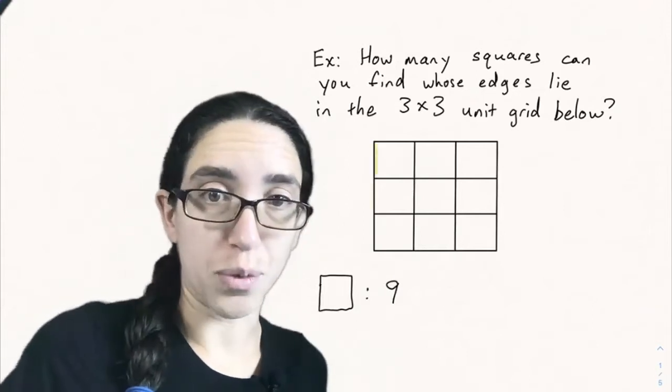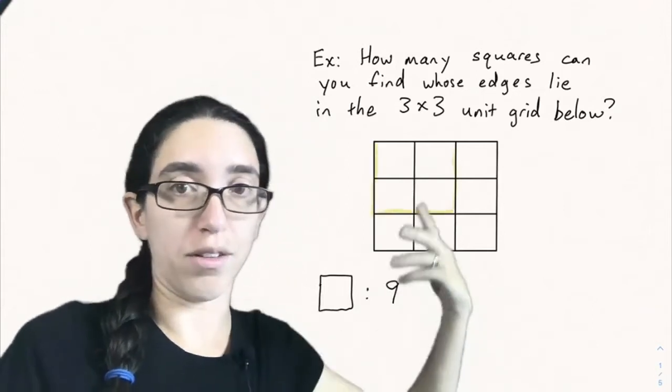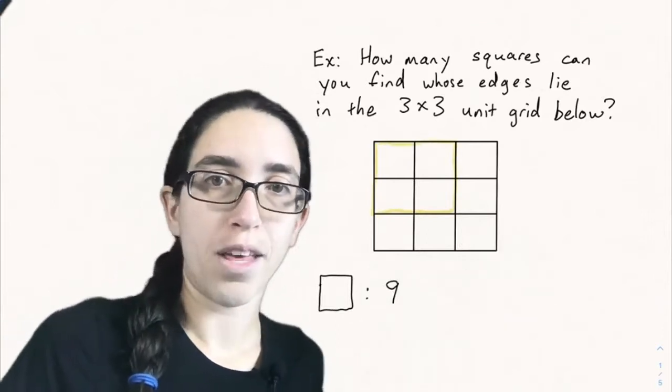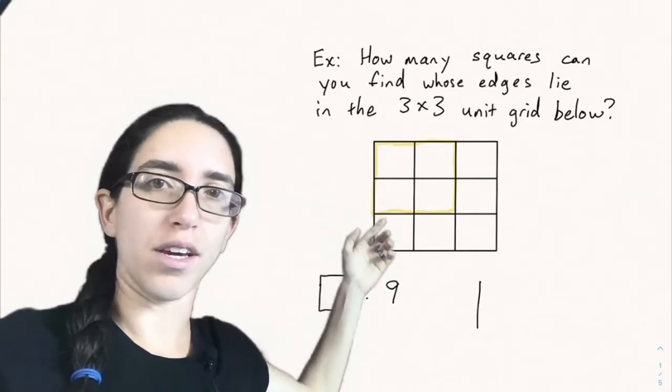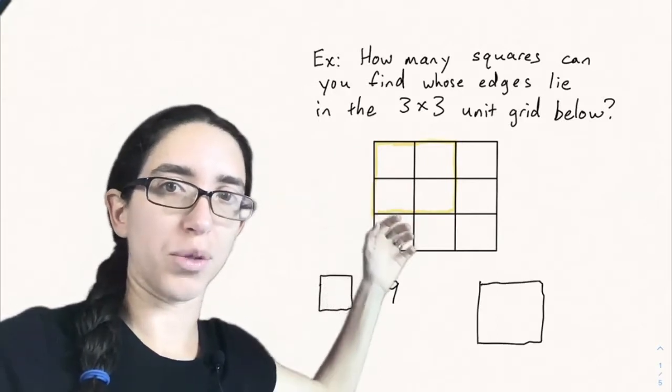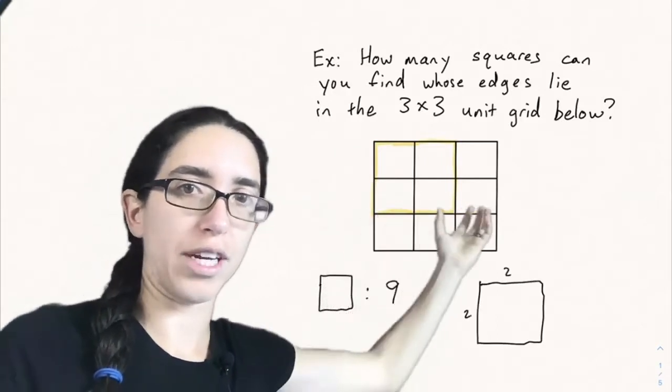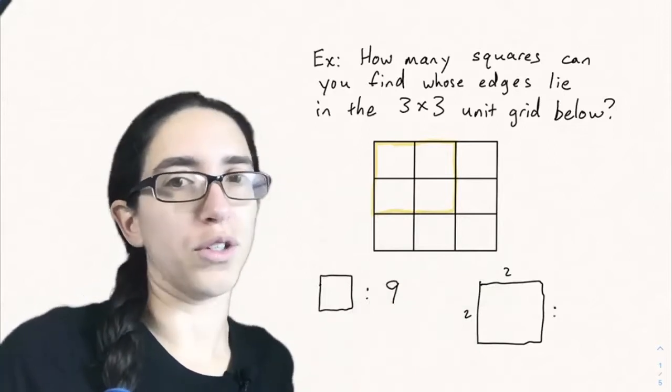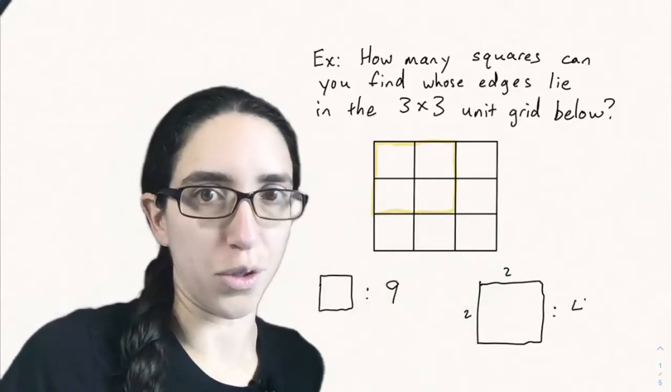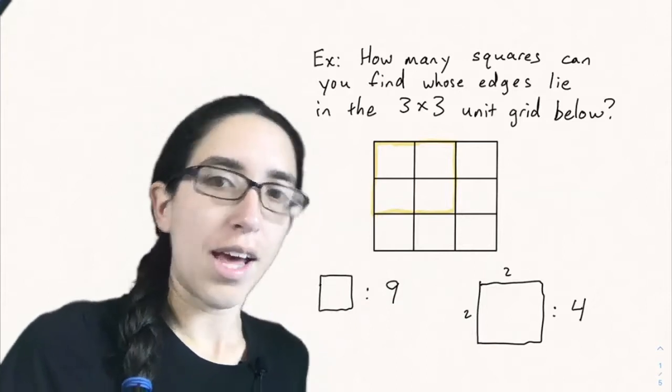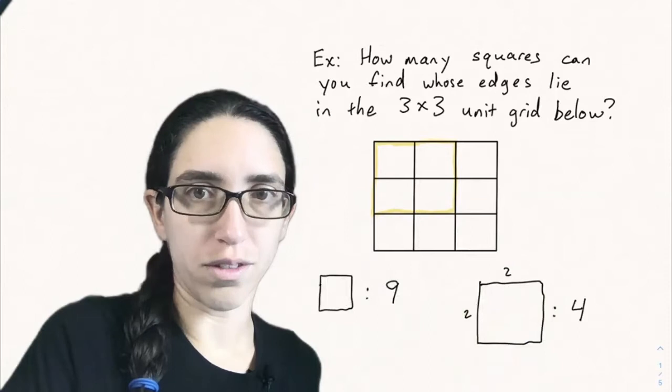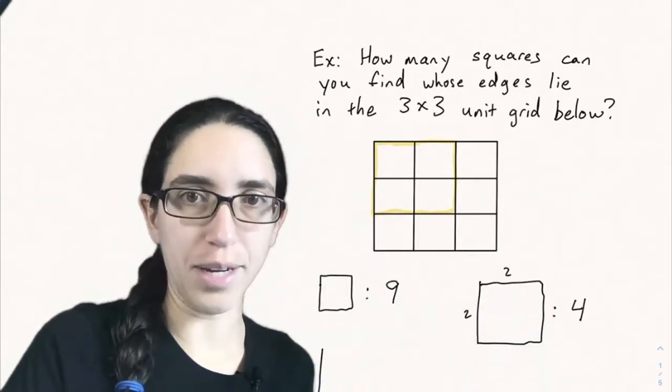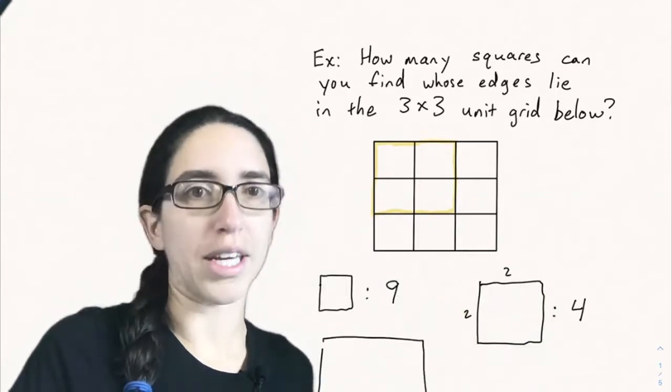But they're not the only type of squares. We can do another case where we look at all the two by two squares. So here's an example that I outlined in yellow. The upper left corner contains a two by two square. In fact, each of the four corners of the grid contain one two by two square. So there's four total two by two squares that you can find in this grid. And then finally there's a three by three square. The total outline of the grid is three by three. And there's just one of those.